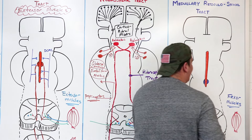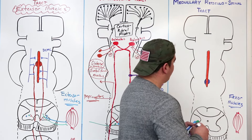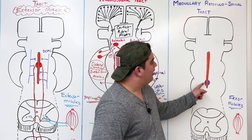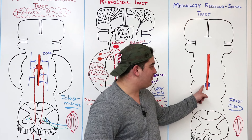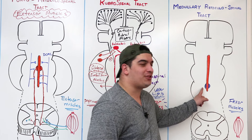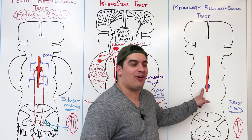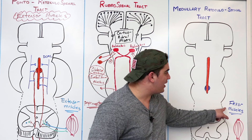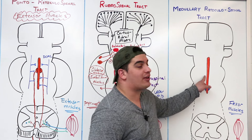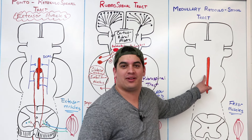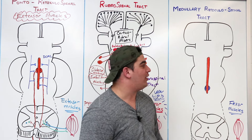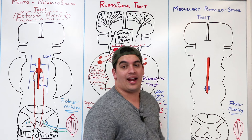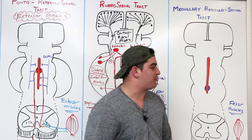It's crazy to think that the medullary reticulospinal — just one part just below the pons — controls your flexor muscles, and up here controls your extensor muscles. They're antagonists to one another in that aspect, which is pretty cool.